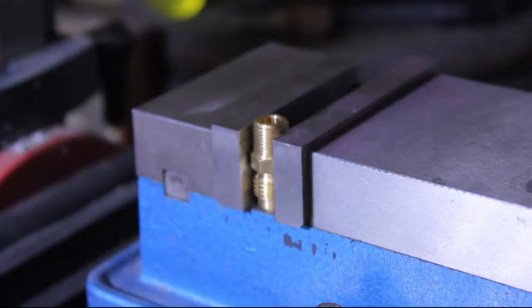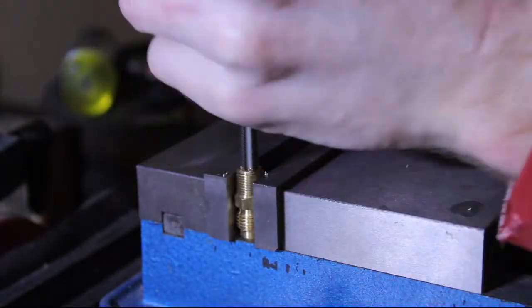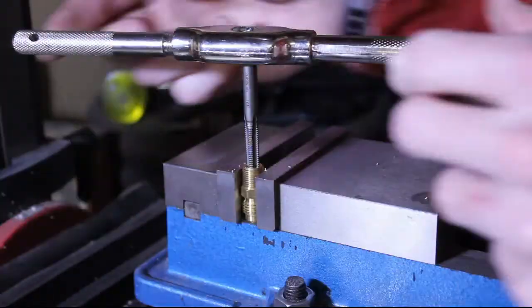Next we'll be tapping the center of the 1/8 inch male pipe thread fitting to accept the MIG tip. The Hobart MIG tips that I am using are threaded in 1/4 inch by 28 NF. The ID of the fitting doesn't need to be drilled in this case since it comes from the manufacturer around the correct size for tapping.